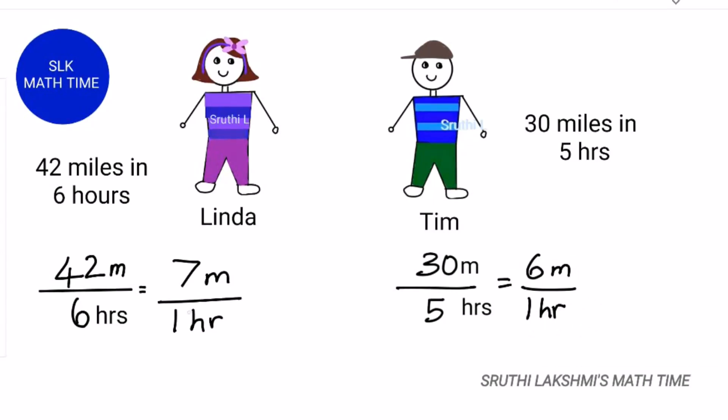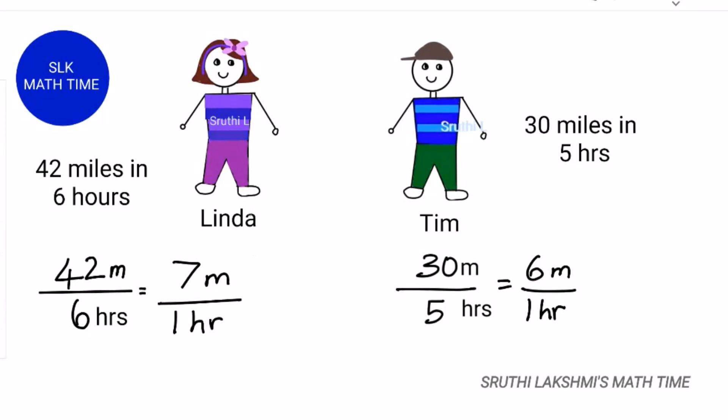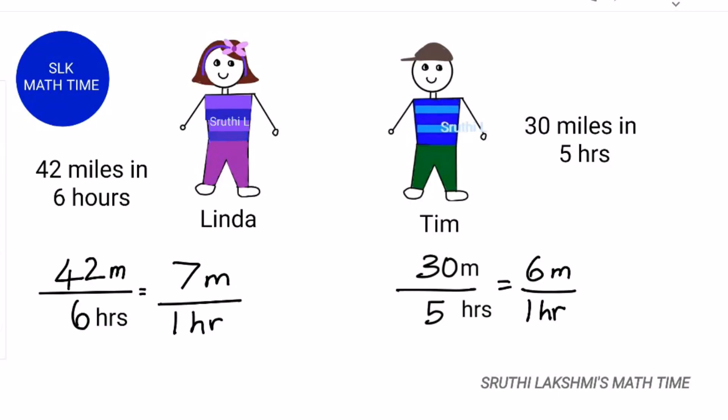Now it will be easy for us to compare because both the denominators are the same. When we compare Linda and Tim's rate, we get to know that Linda jogs faster.